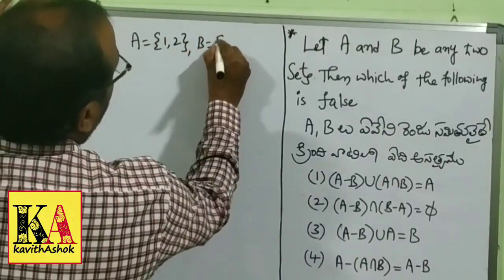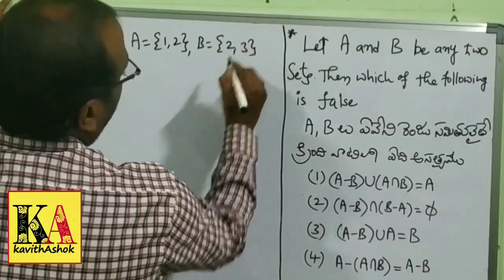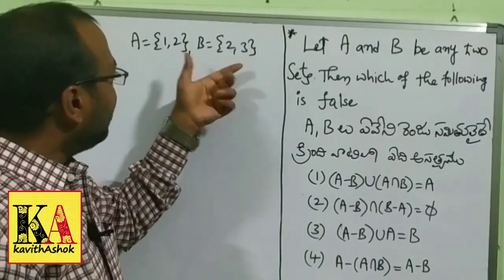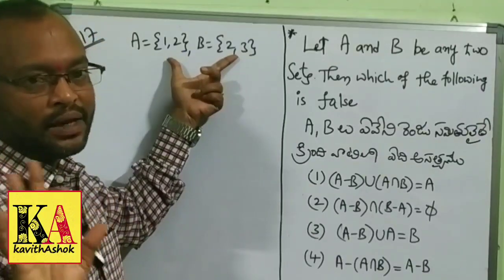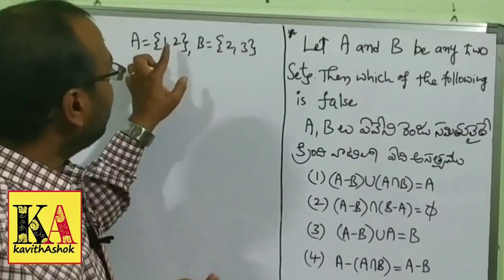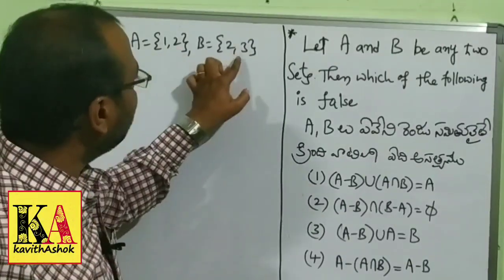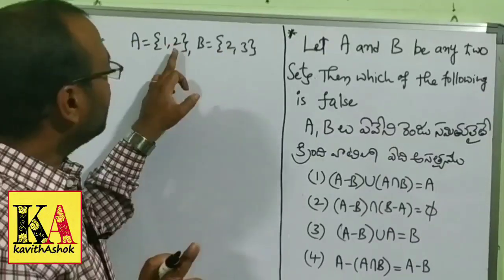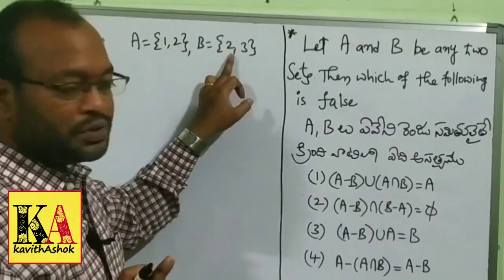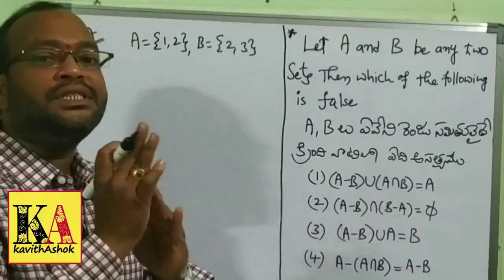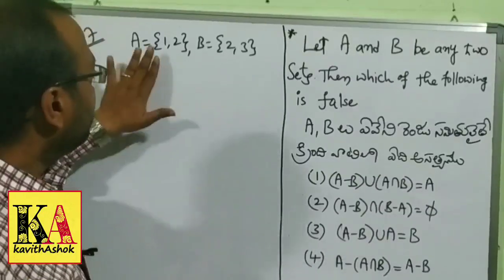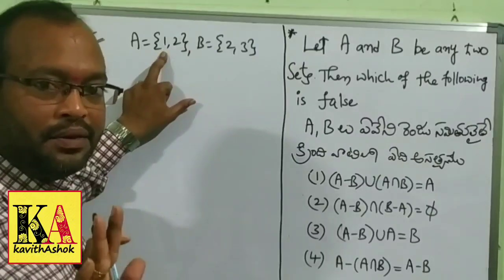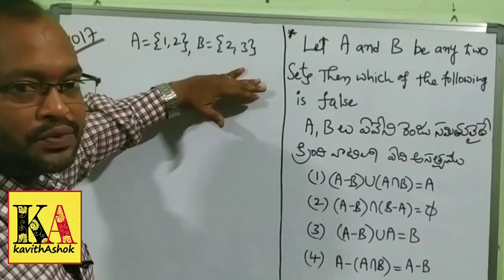Let B = {2, 3}. That means you select the same elements. Choose something like A = {1, 2} — a problem with A and B. It is easy to choose, right? So A = {1, 2} and B = {2, 3}. Now with this convenience, I'll check each condition.